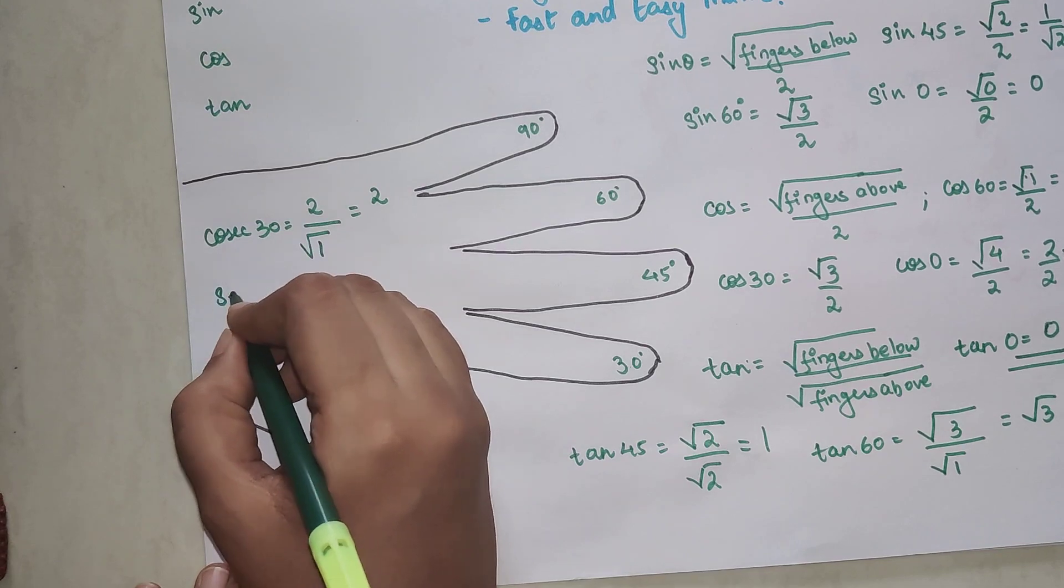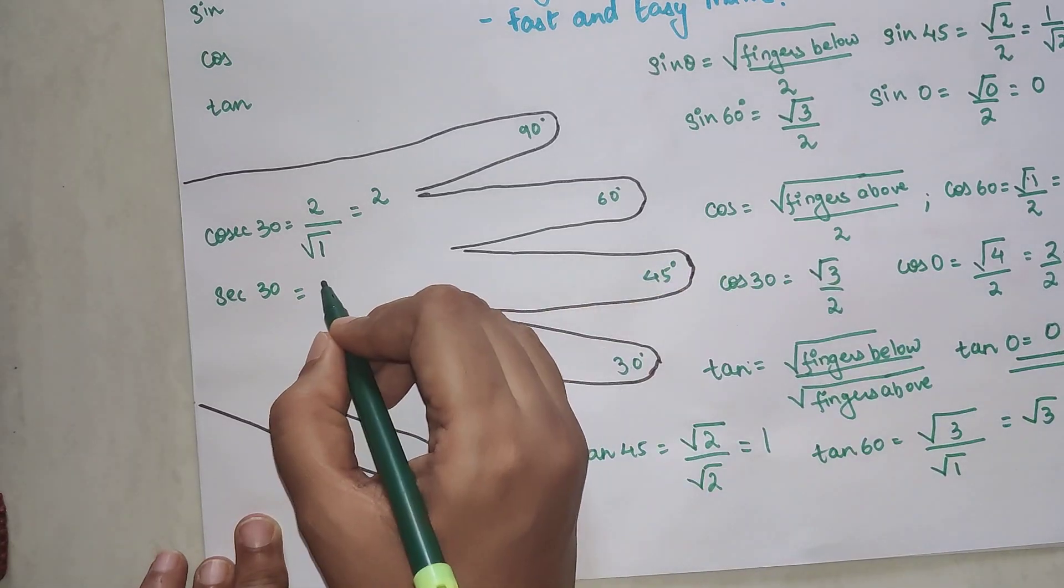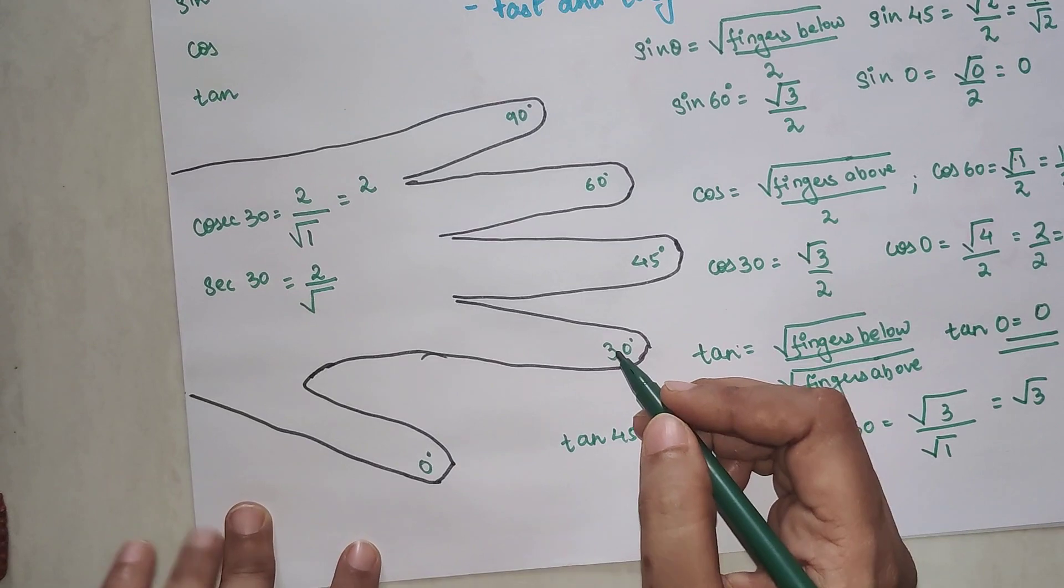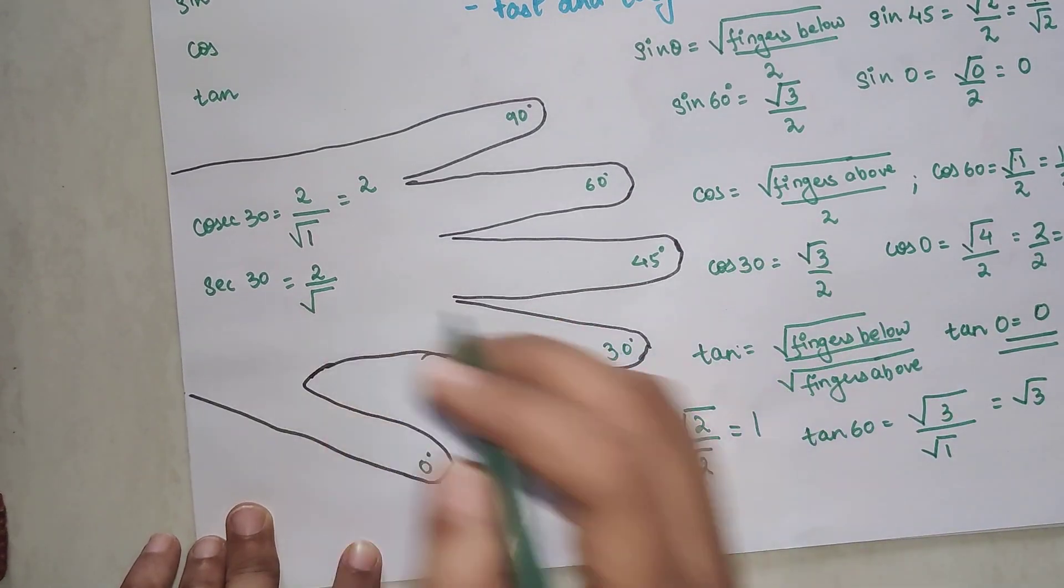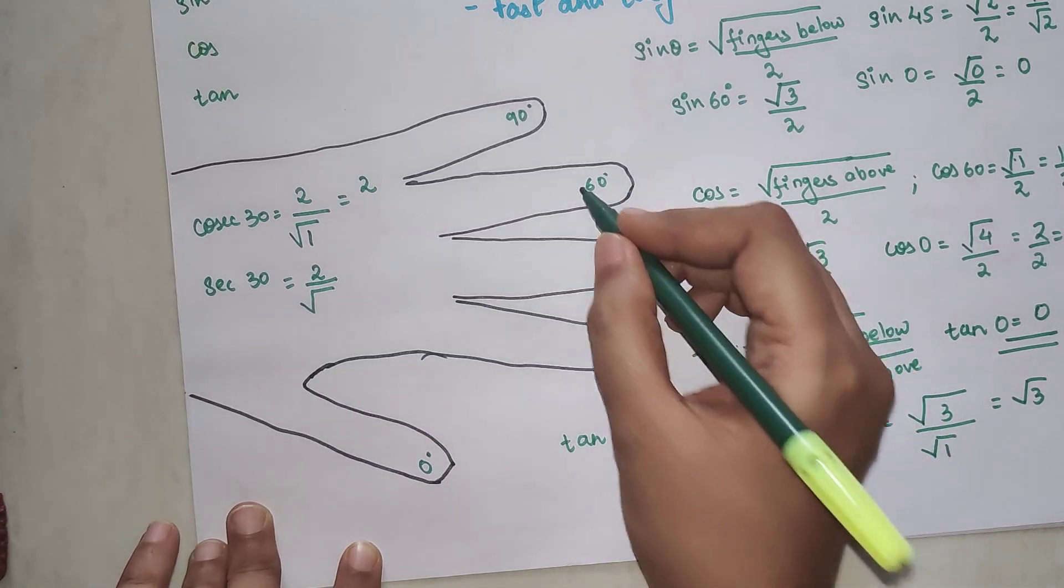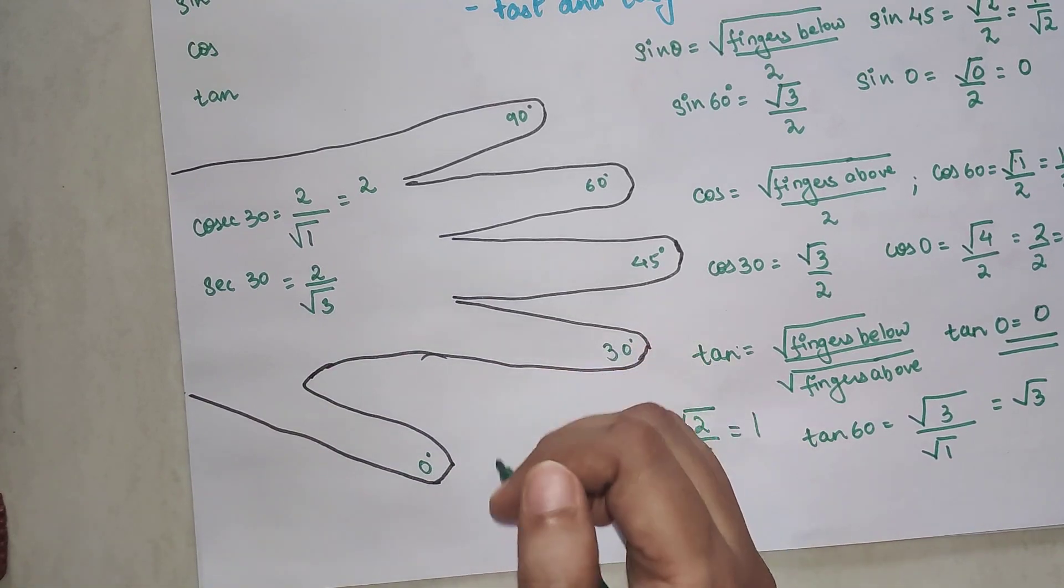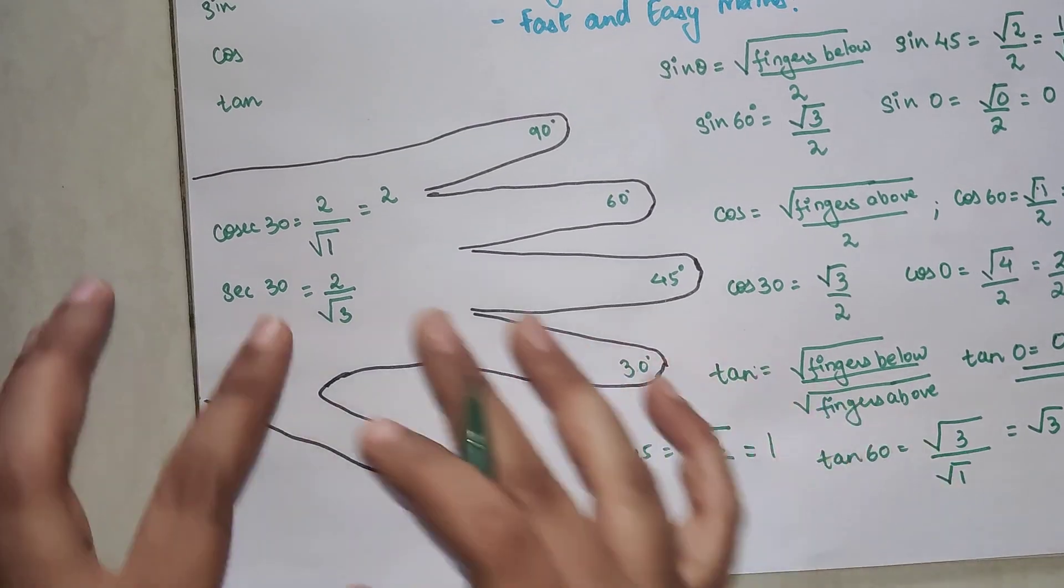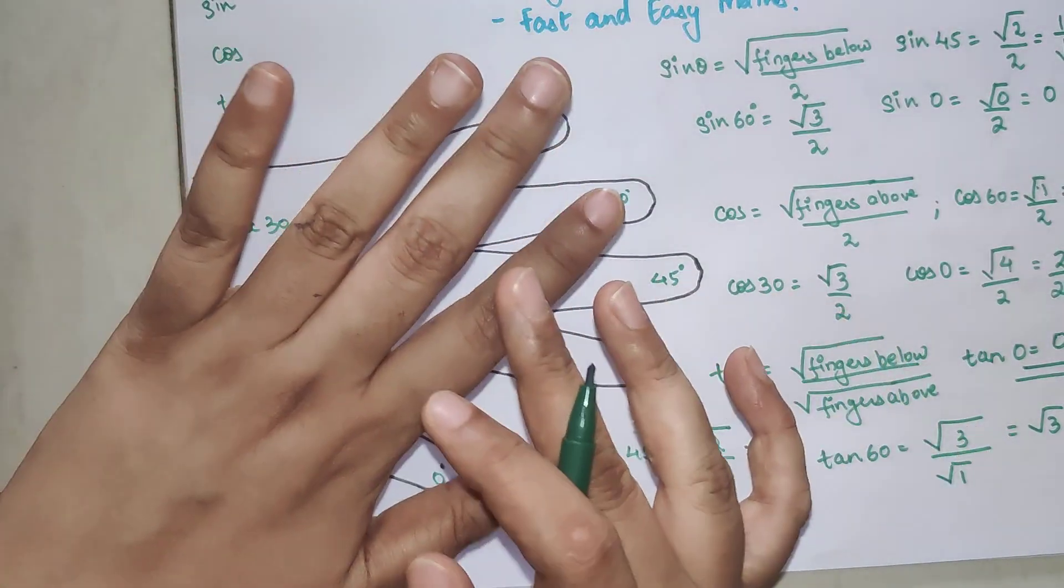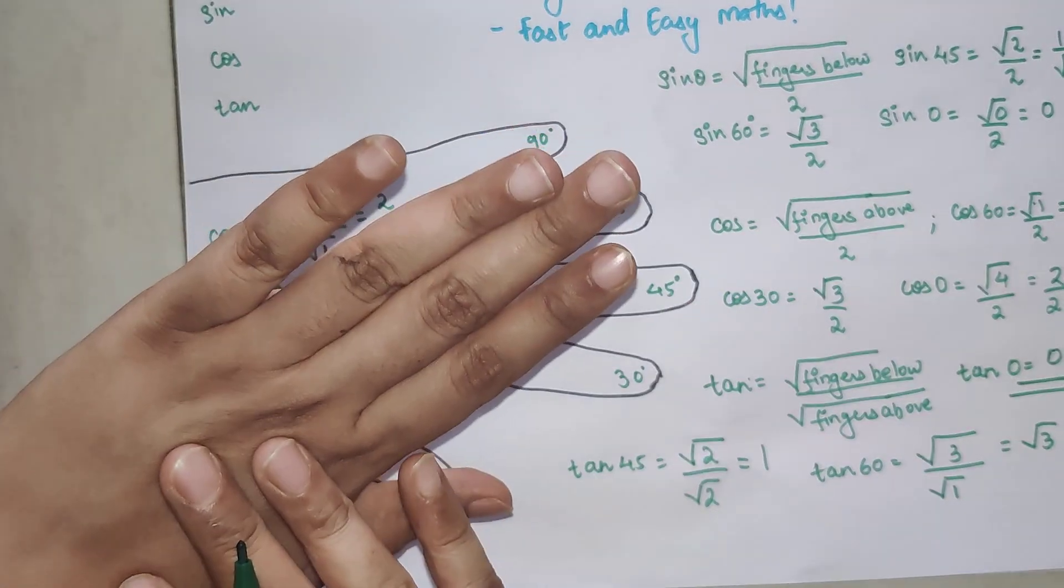Now similarly for sec 30. Again we are going to use the same formula for cos, but again it will be reversed. So 2 will come on top and number of fingers above 30 will come in below as your denominator. So how many fingers are above 30? 1, 2 and 3. So 2 upon root 3 is my answer for sec 30. So I hope you are getting how to do these kind of sums just with the help of your left hand.